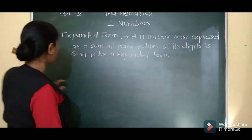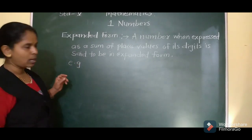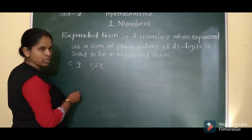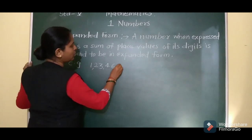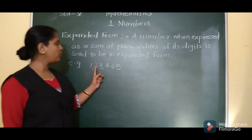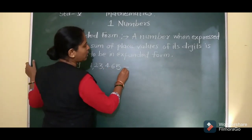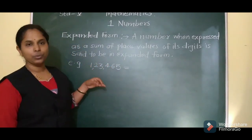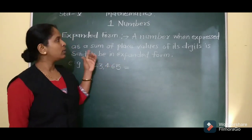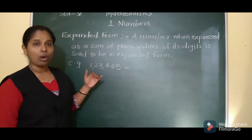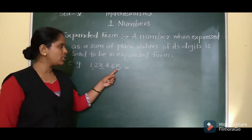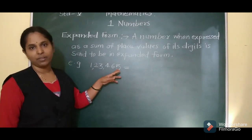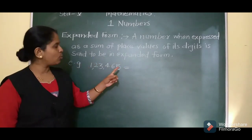For example, consider the number 1,23,465. To write this number in expanded form, we have to use place values. Now, 5 is at the 1's place, so the place value of 5 is 5 into 1, that is 5.